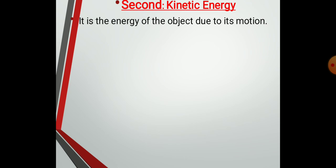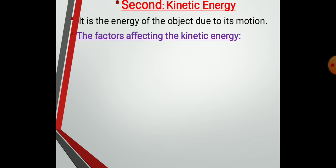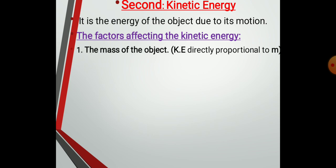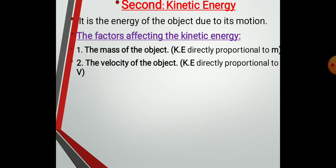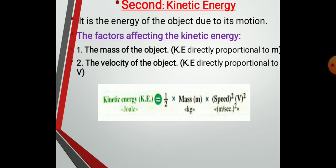Now we're going to talk about kinetic energy. It's the work done during the motion of an object. The factors affecting kinetic energy are: number one, the mass of the object, and number two, the velocity or speed of the object. If one car has a larger mass than the other moving at the same speed, the work done needed to stop the larger mass increases, because the kinetic energy of a moving object increases with increasing mass, so the work done to stop it increases.